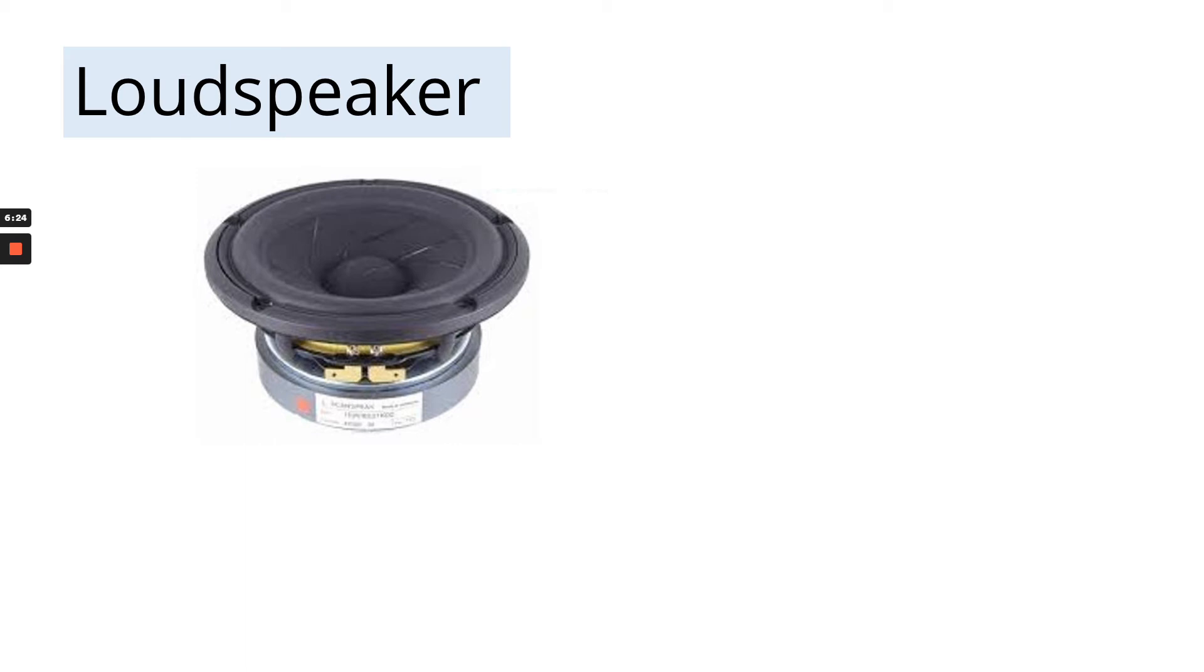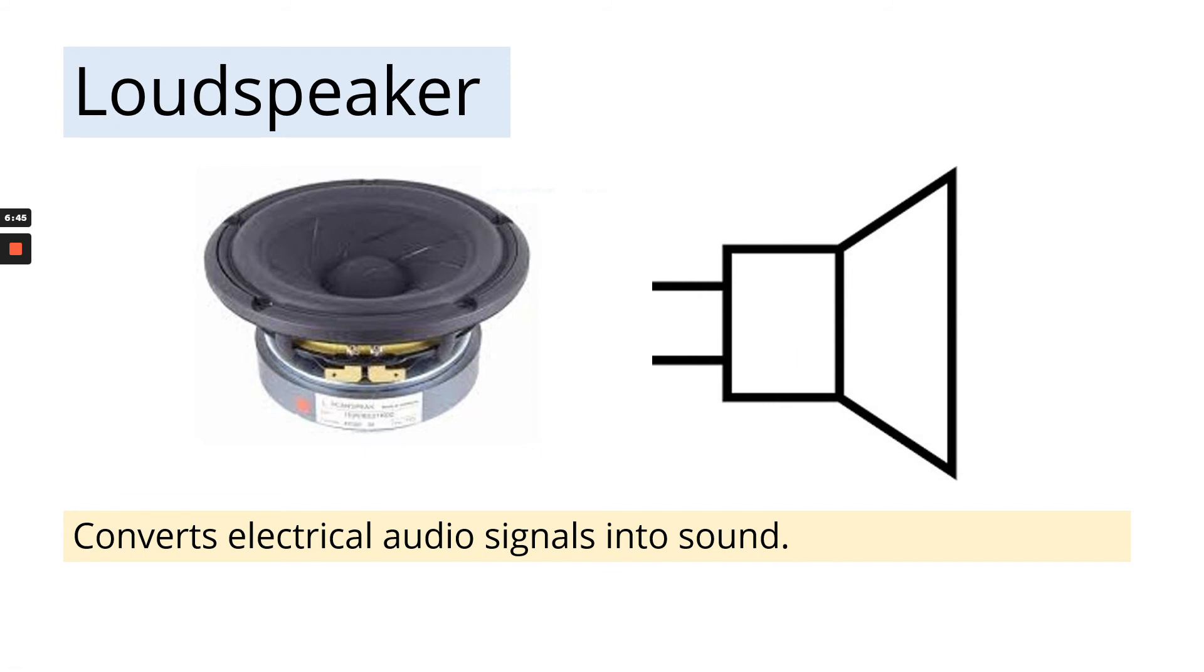The next component is a loudspeaker. So this is the component symbol for a loudspeaker. Notice that the two wires are both on the left-hand side. The description for a loudspeaker is that it converts electrical audio signals into sound. So it takes the signals from a microchip and it converts it into the sound that we hear when we play music on our phones or on the radio.